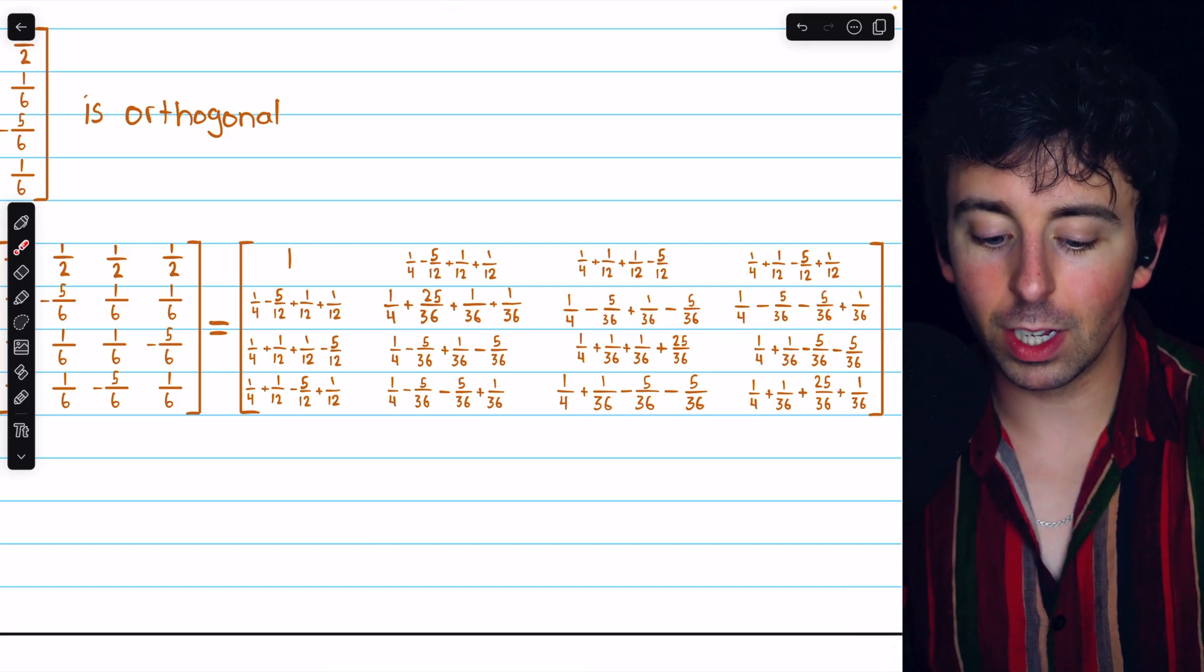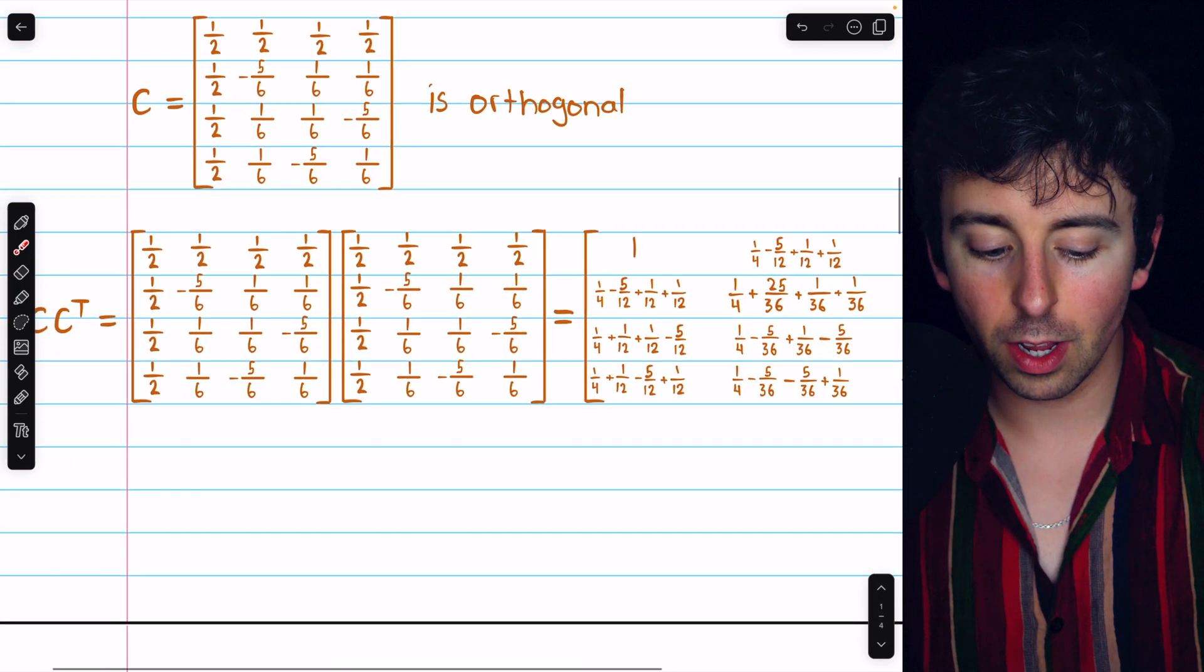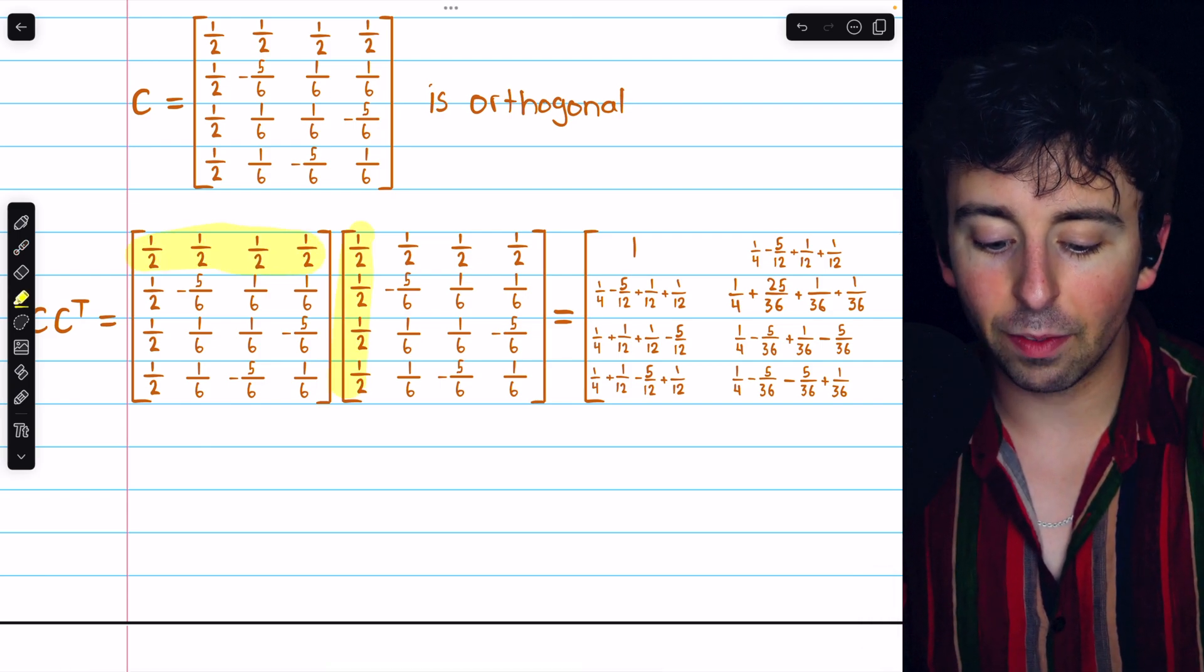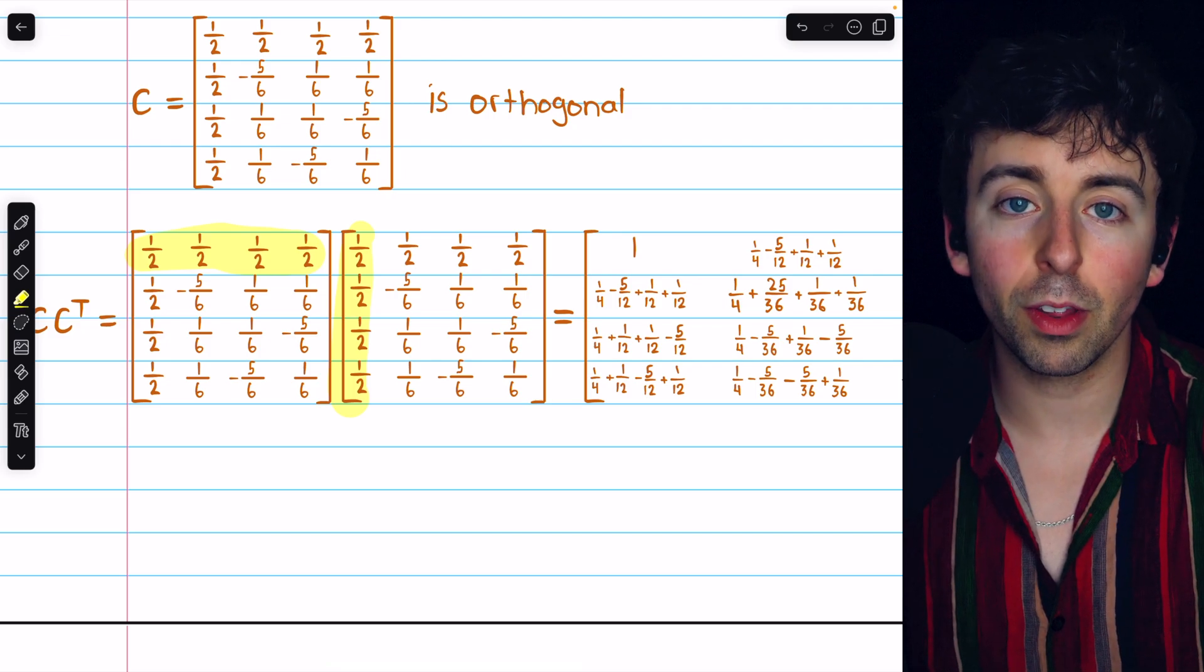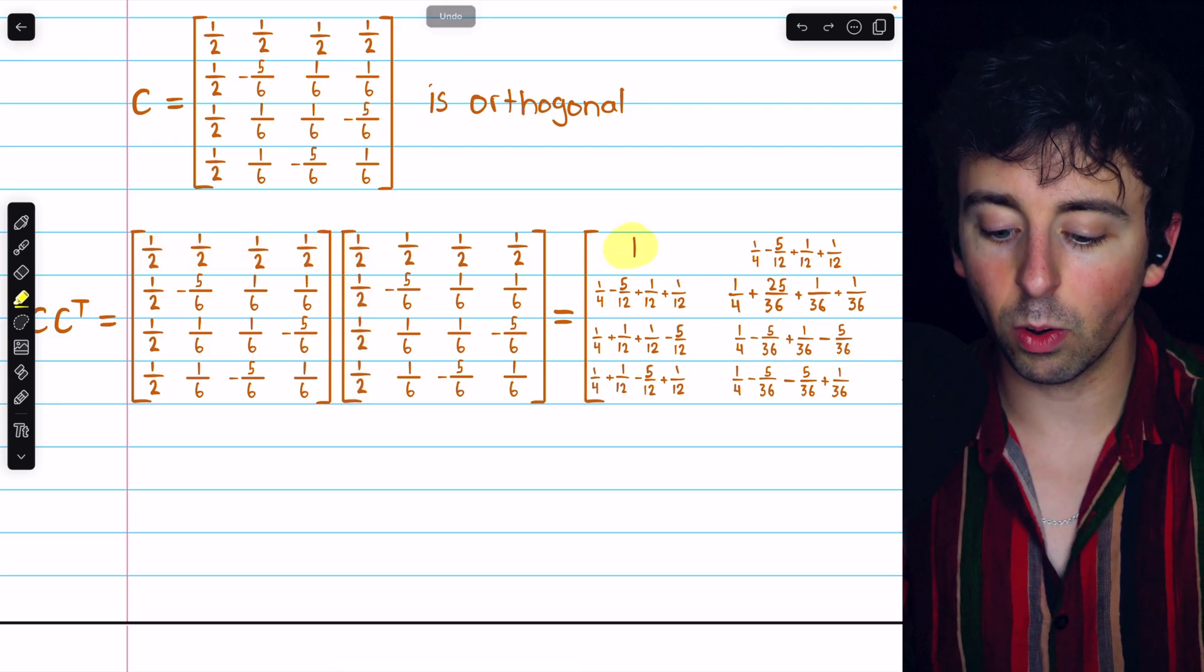The only entry that's really simple is just that first one, because we end up having just a bunch of halves getting multiplied together, so it's a fourth plus a fourth plus a fourth plus a fourth. Obviously, that's four fourths, or 1.